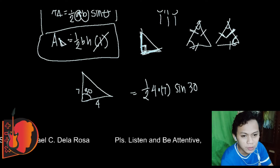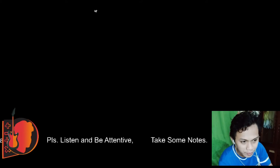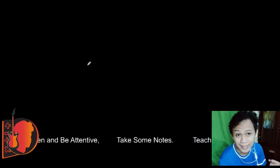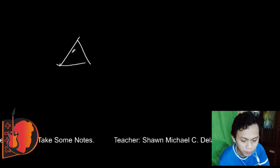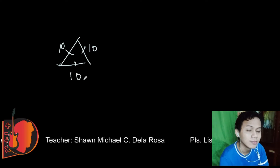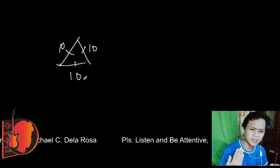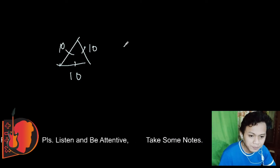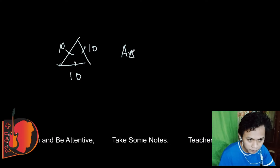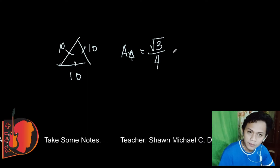Now let's look at the equilateral triangle. Equilateral means all sides are equal. For example, a triangle with all sides equal to 10. The formula for the area of an equilateral triangle is: square root of 3 over 4, times s squared, where s is the side length.